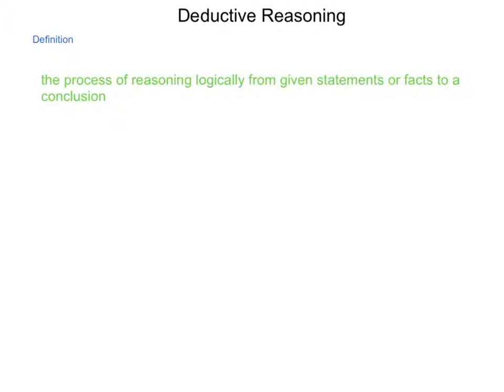In the process of deductive reasoning, we have two different laws that we're going to be looking at, pulling them apart, and seeing how they can be used and common errors that occur when they are being used.